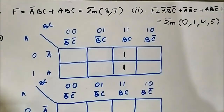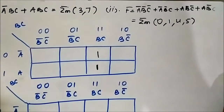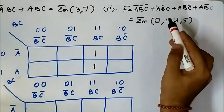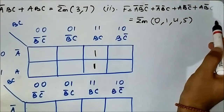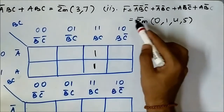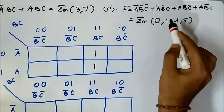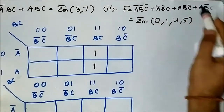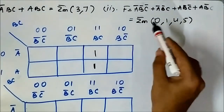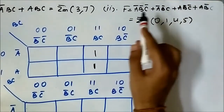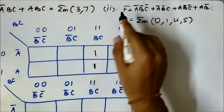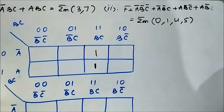Next is A̅B̅C̅ + A̅B̅C + AB̅C̅ + AB̅C, which corresponds to the decimal min term values 0, 1, 4, 5. This is the symbol for sum of min terms — sum of products is also called sum of min terms. So we have to map this Boolean expression into the three-variable KMAP by highlighting or marking the corresponding cells as 1.